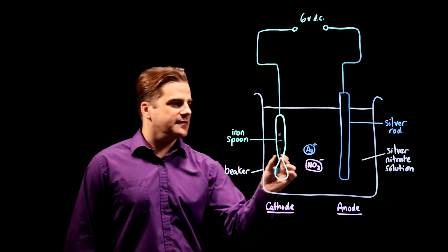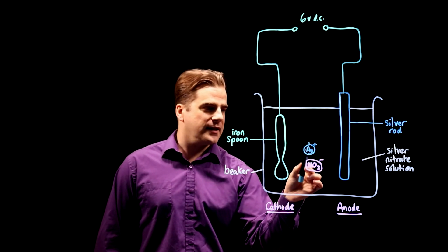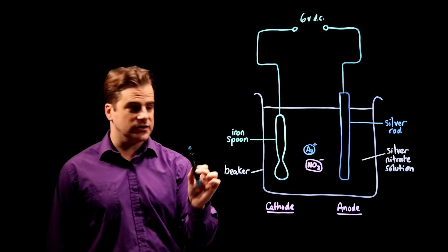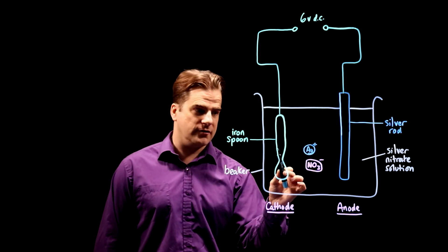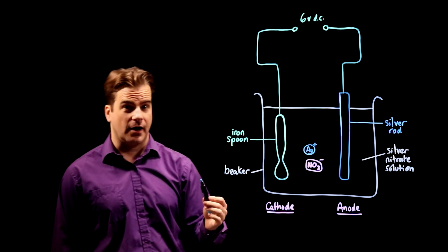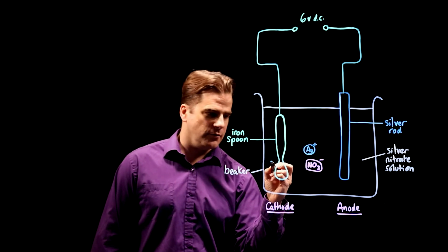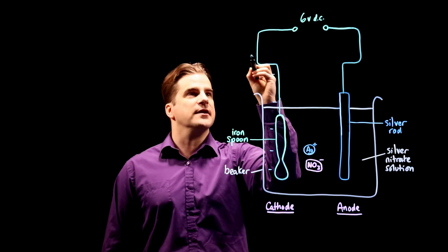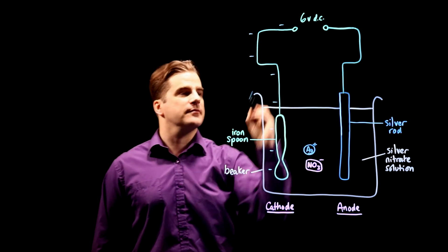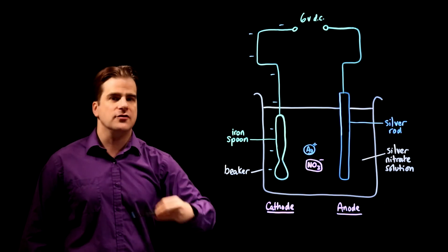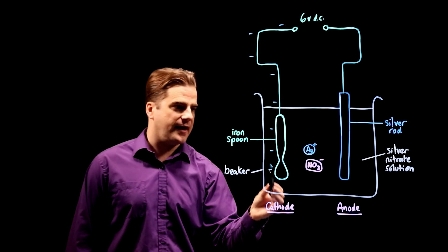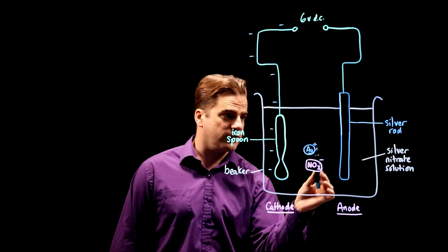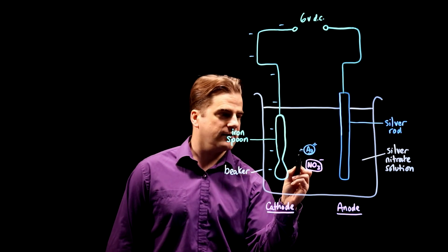What I'm getting at is that it's a metal ion and therefore will have a positive charge and if it's going to get attracted towards a spoon which you know it is because the spoon is going to get covered in silver the spoon must therefore have a negative charge which means all of this must be negative.